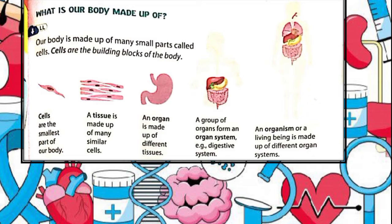Our two lungs are also organs of our body, located on either side of the upper chest. Their main function is exchanging oxygen and carbon dioxide with the blood.